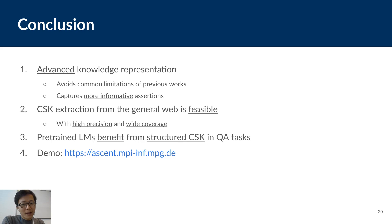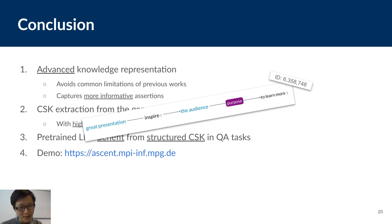And to conclude, in this paper, we introduced an advanced data model for common sense knowledge bases that avoids common limitations of existing works and captures more informative assertions. We proposed a methodology for extracting and consolidating common sense knowledge automatically from the web. We showed that it's not only feasible but also the resulting KB comes with high precision and better coverage compared to other automatically built KBs. And in the extrinsic evaluation, we showed that the large pre-trained language models can benefit from structured common sense knowledge in QA tasks. And finally, we built a demo so that you can explore our resources.